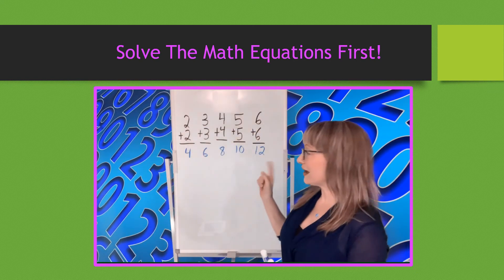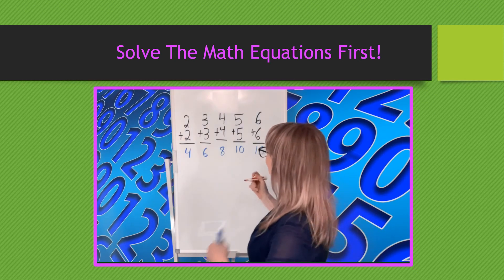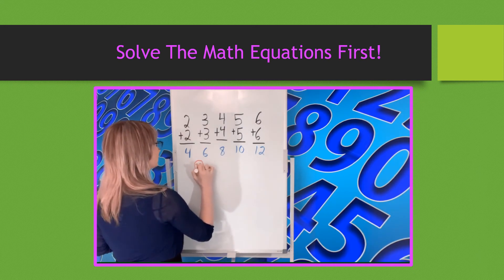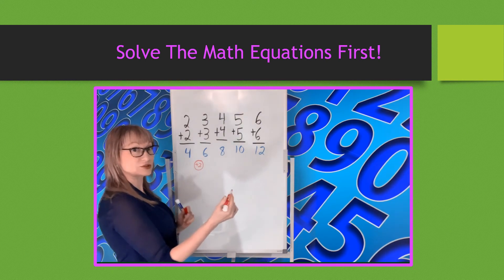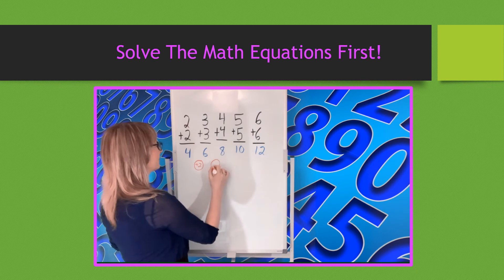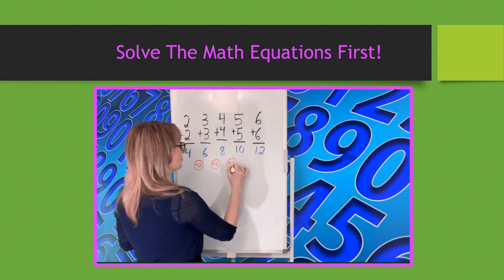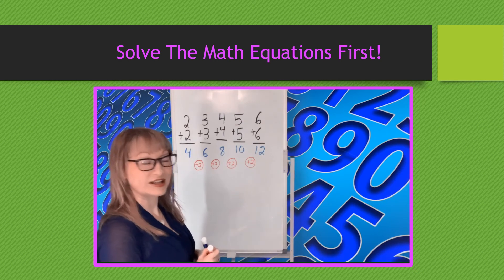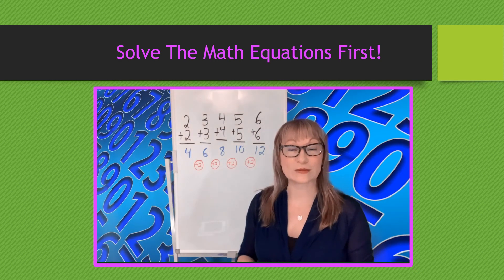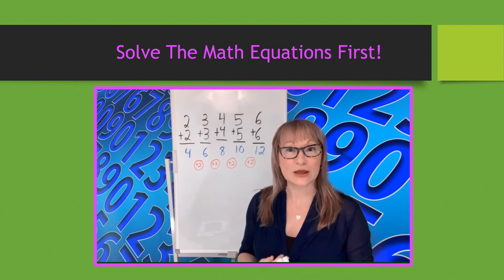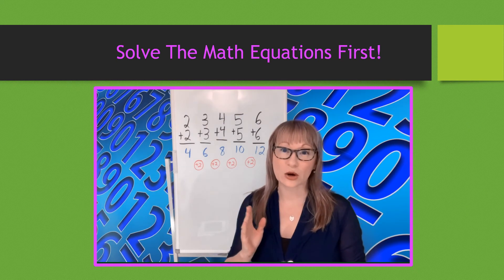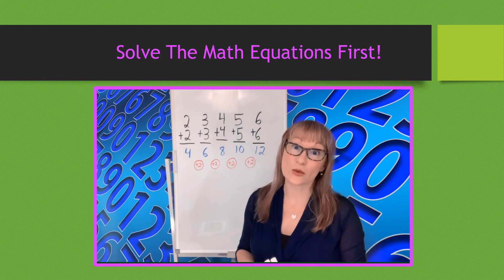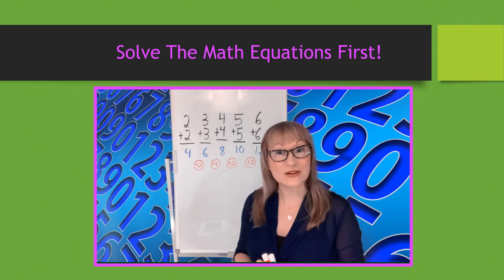Once you have your answers, look at them and figure out the gap. The gap between 4 and 6 is plus 2 — counting 4, 5, 6, there are 2 in between. Then 6, 7, 8 is plus 2; 8, 9, 10 is plus 2; and 10, 11, 12 is plus 2. So my gap is plus 2. Solve the math equations first, then stare at the answers and figure out the gap to determine the pattern — whether it's growing or shrinking — and label it. This one is growing because the number is getting bigger. Have fun with them!